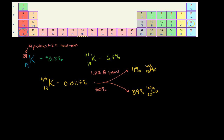89% turns into calcium-40, and you can see calcium on the periodic table right over here — it has 20 protons. So in that case, one of the neutrons turns into a proton. What's really interesting to us is the argon-40 part, because argon is a noble gas — it is unreactive. When it is embedded in something that's in a liquid state, it'll just bubble out. It's not bonded to anything, so it'll just go out into the atmosphere.